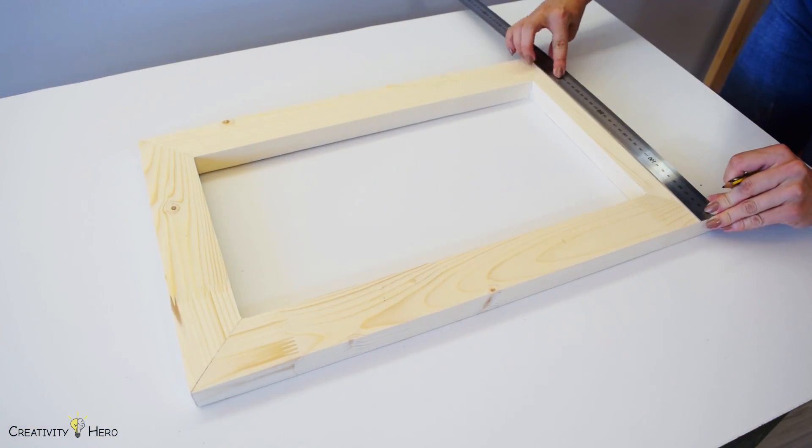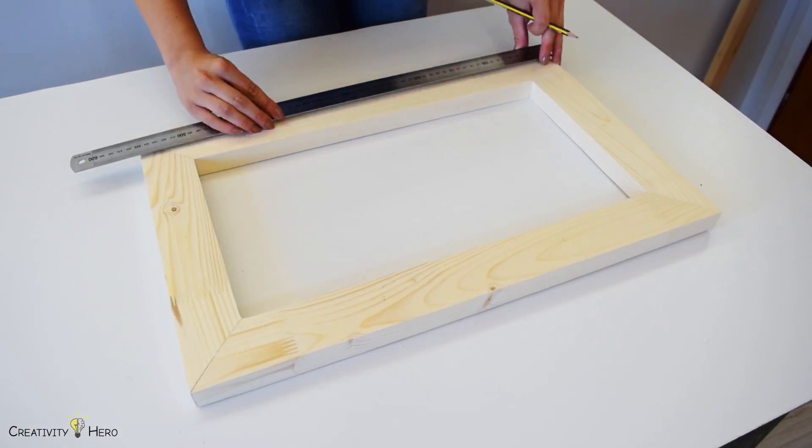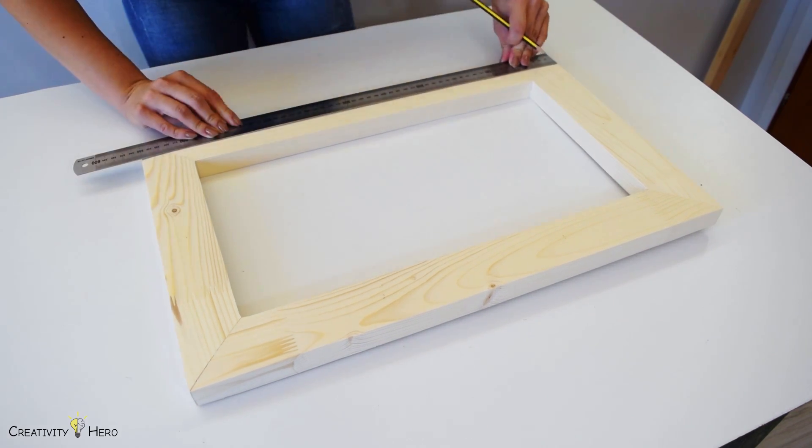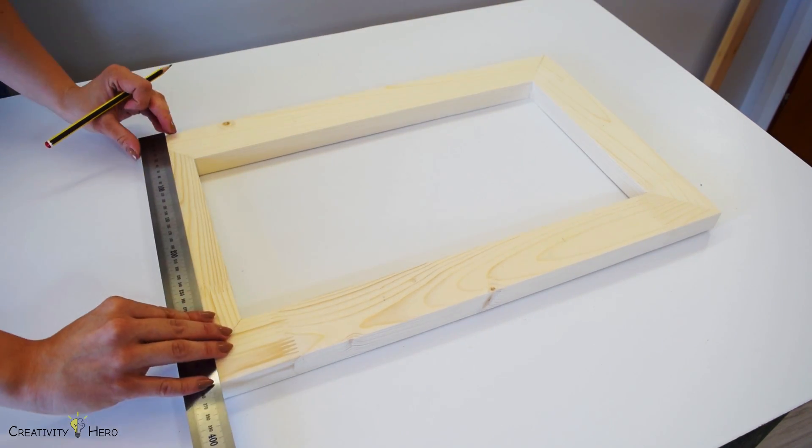The next step is marking the center points for the location of the light bulb sockets because I would like them to line up. There are a total of 6 sockets.